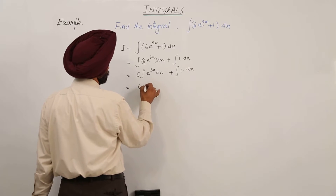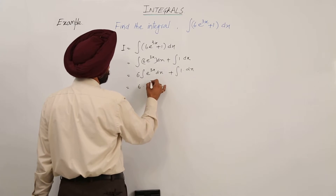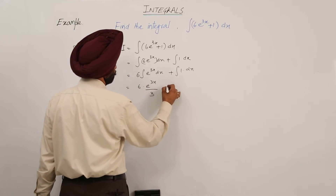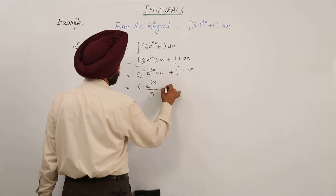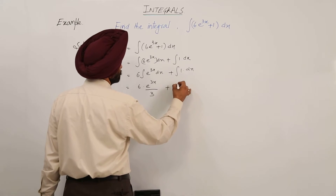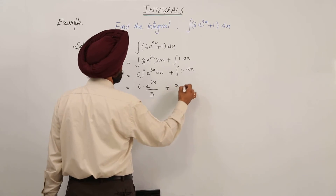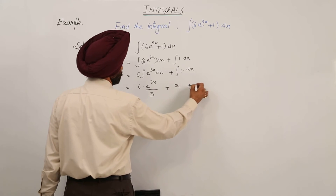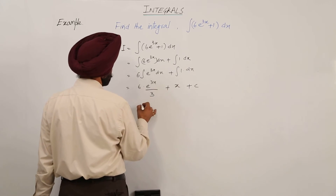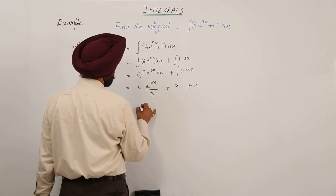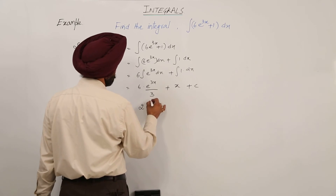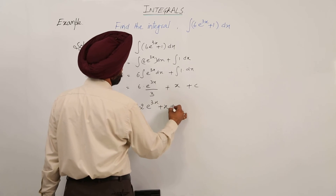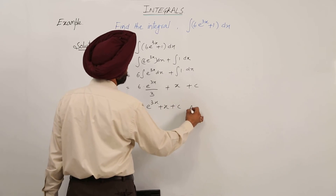This becomes 6e raised to power 3x upon 3, plus x plus c. Or this can be written as 2e raised to power 3x plus x plus c. This is the answer.